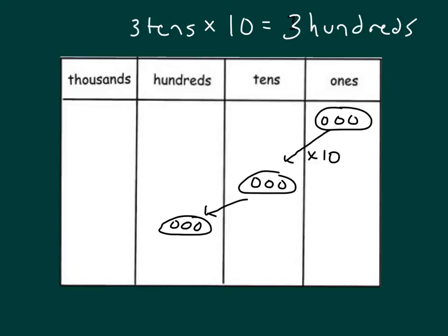If I was to do that again and go 3 hundreds times 10, and let's write that equation down here, what would I get? 3 hundreds times 10. We move that group over one more time, and we would have 3 what? Right, 3 thousands.